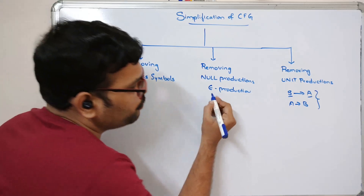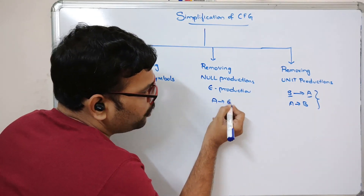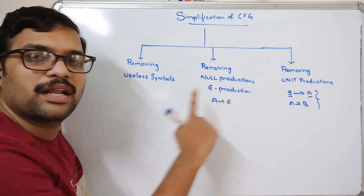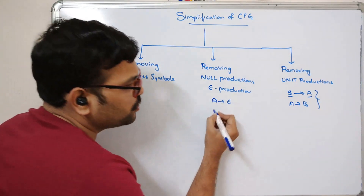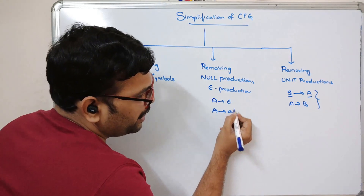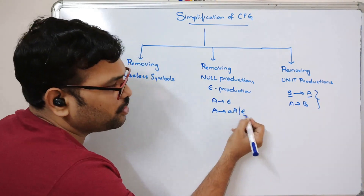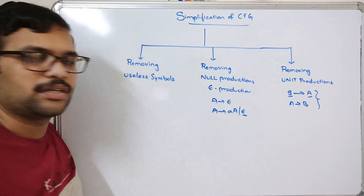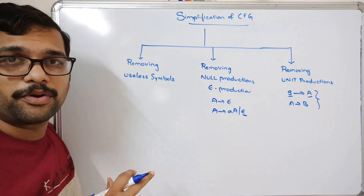To clarify: A tends to epsilon — this is a null production. Or A tends to A, capital A, or epsilon — this is also a null production. We need to remove such types of null productions.